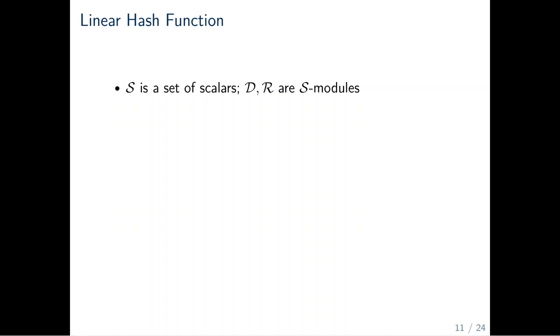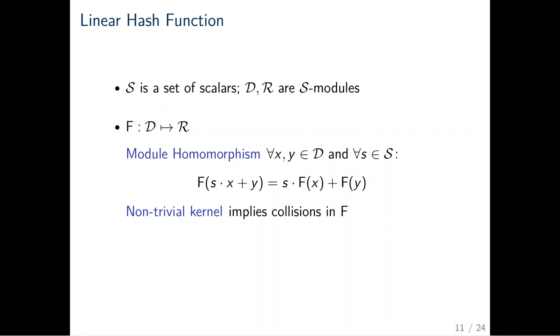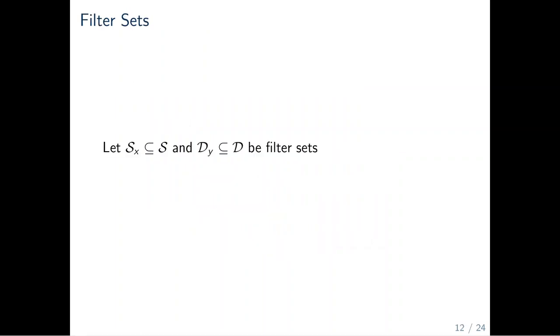A linear hash function is defined by three sets. A set of scalars S, a domain D, and a range R, where D and R are S-modules. Let F be a map from the domain to the range. We require F to be a module homomorphism, meaning that F preserves addition and scalar multiplication. Further, we require the kernel of F to be non-trivial, implying that F is compressing. Finally, F is required to be collision resistant. In the OMUF proof, we reduce the hardness of breaking the OMUF security to the hardness of finding collisions in F.